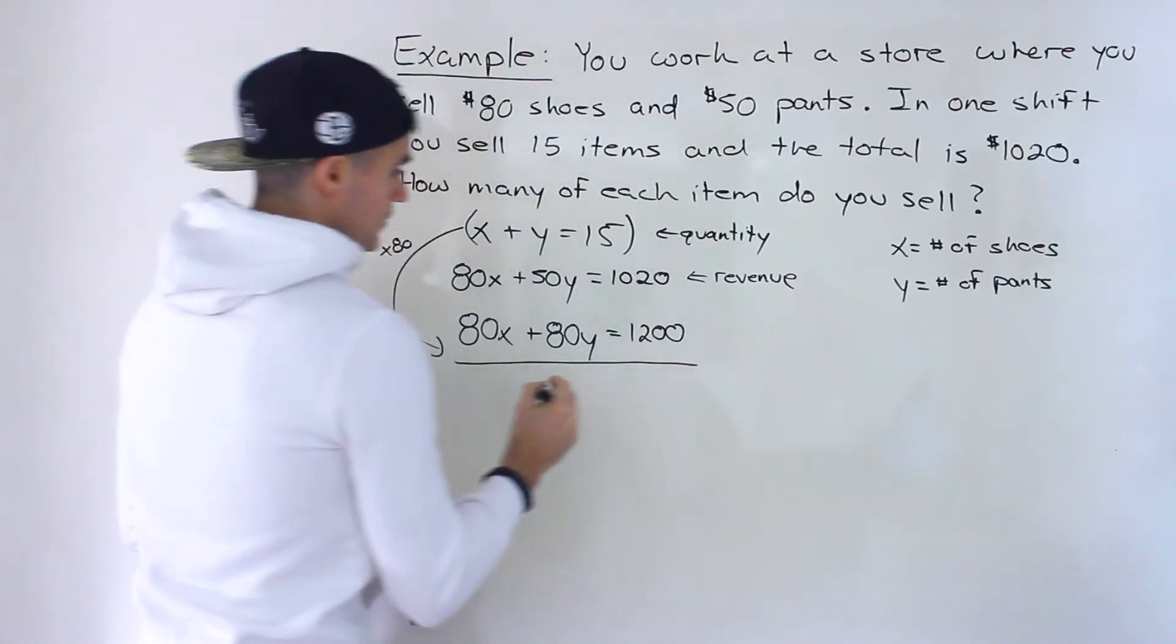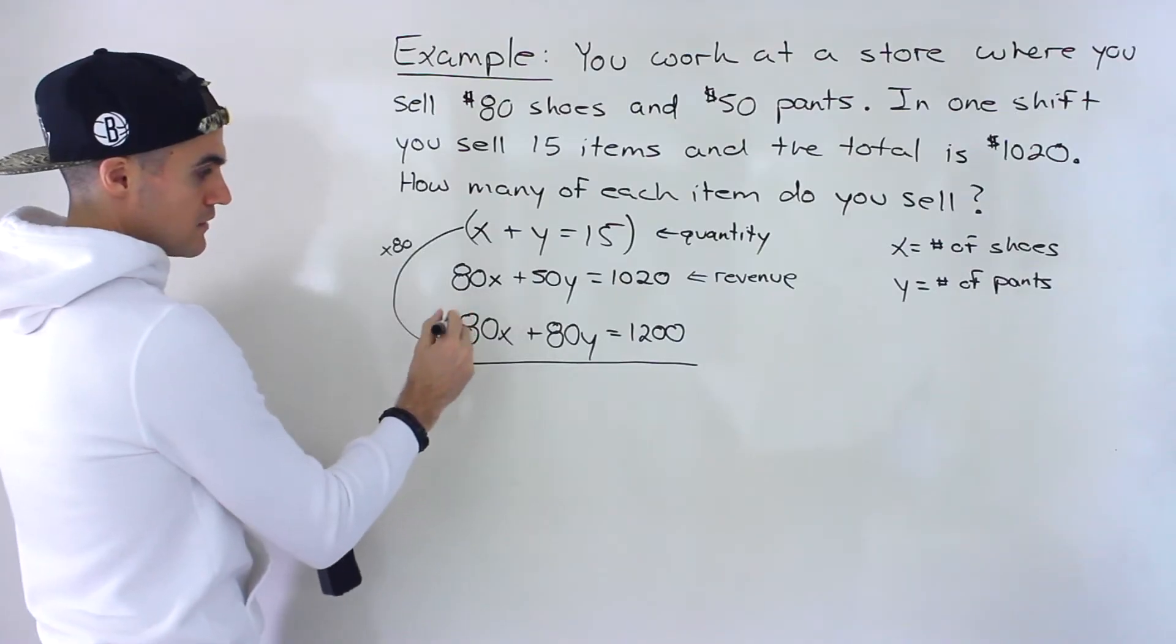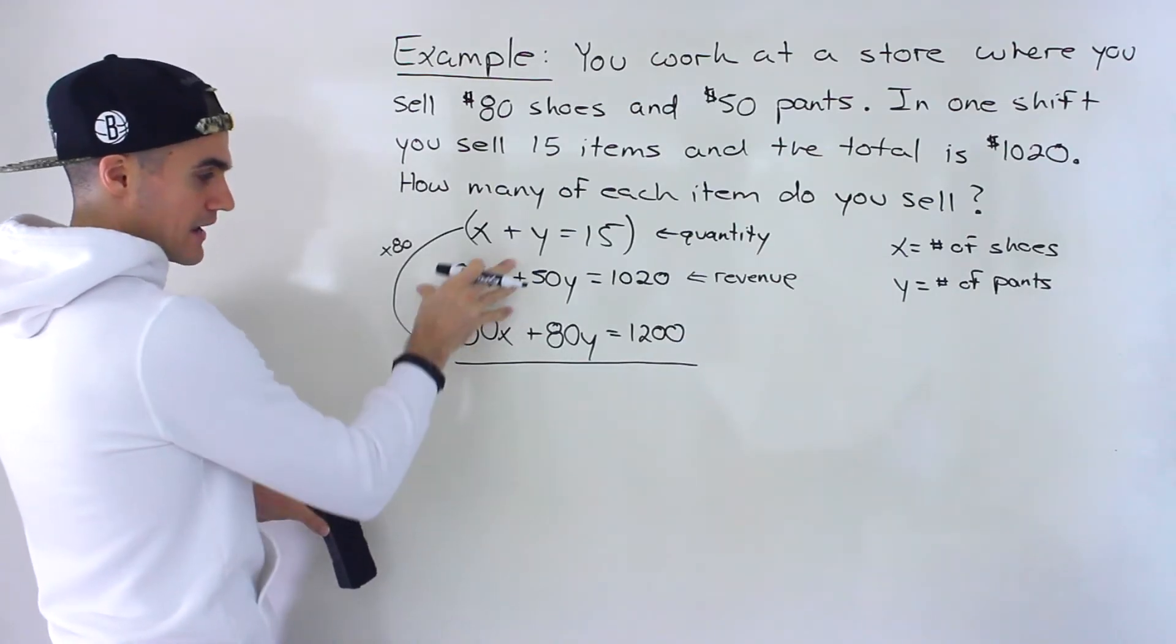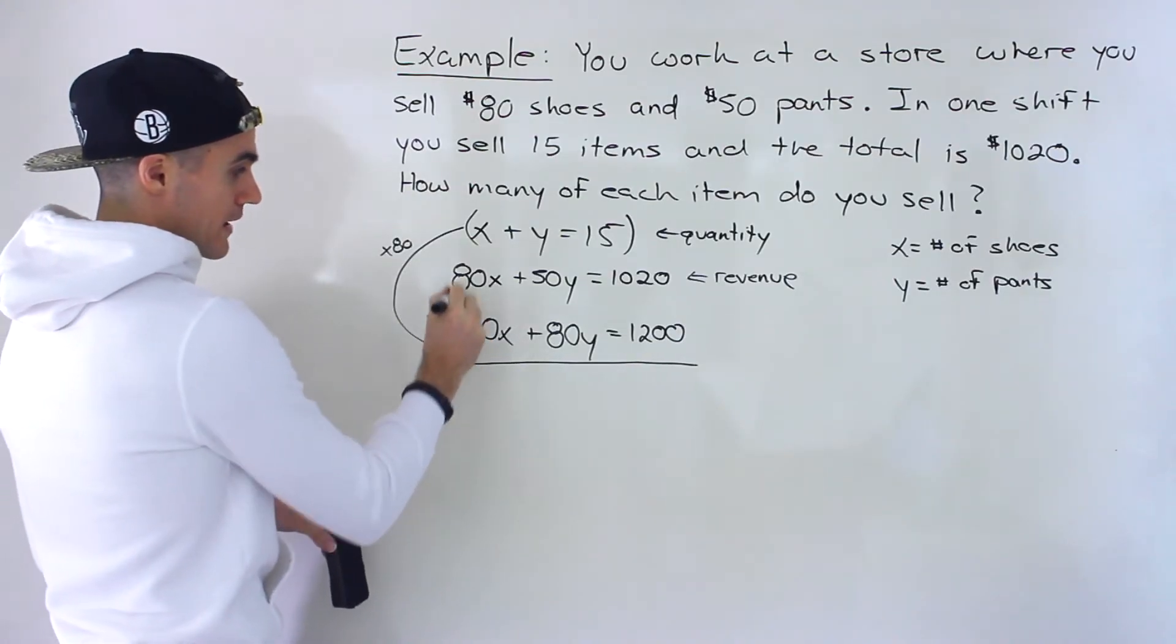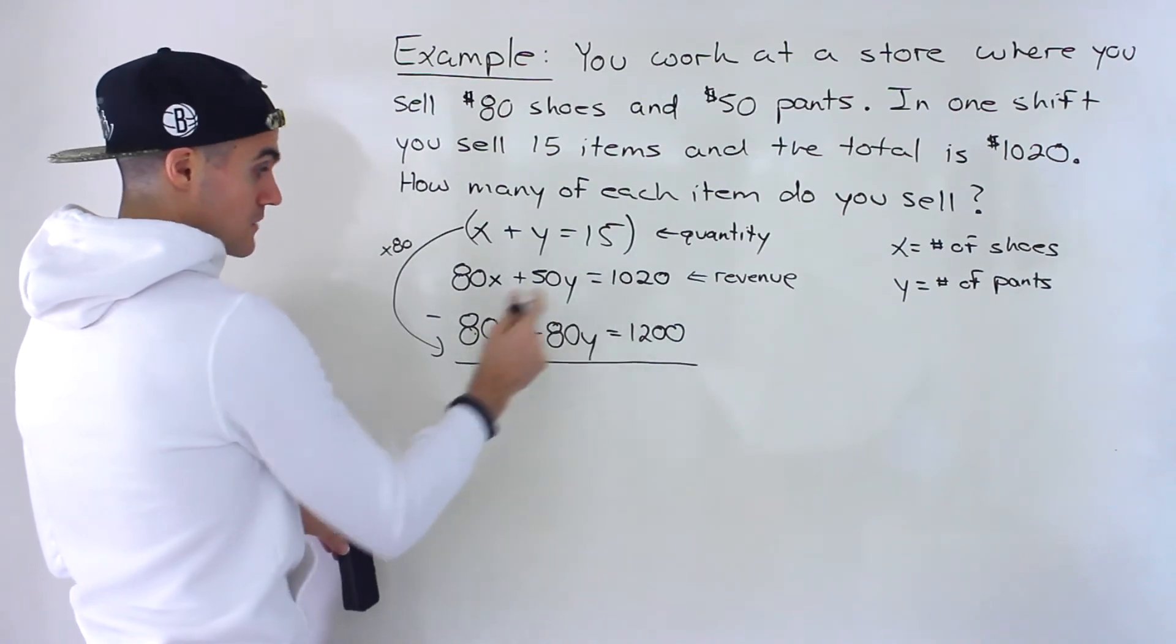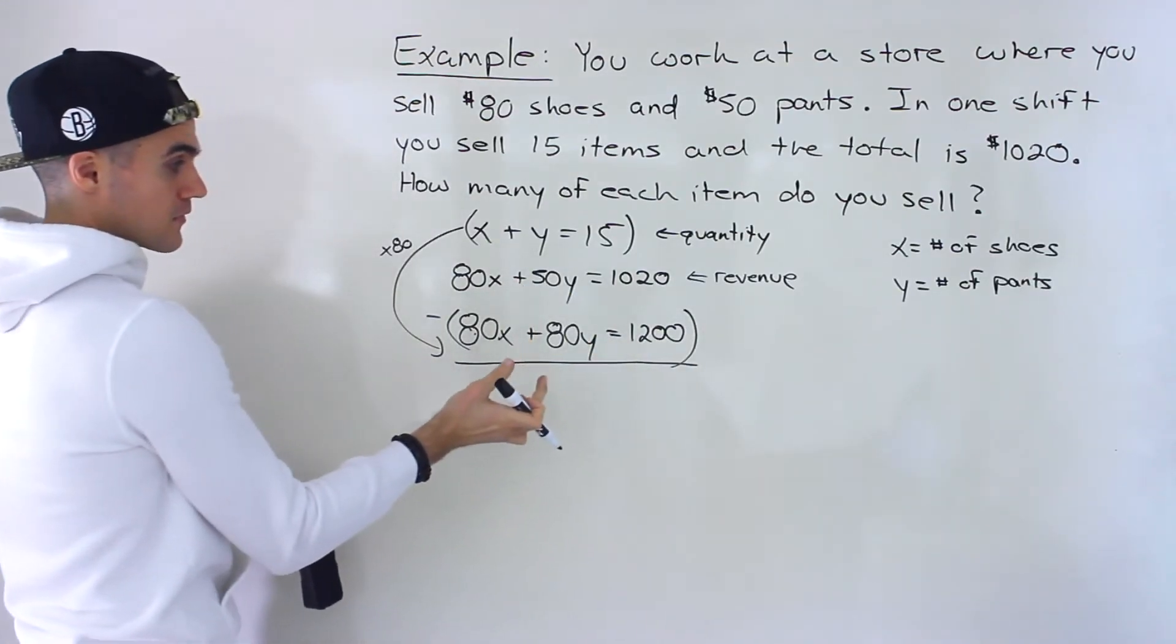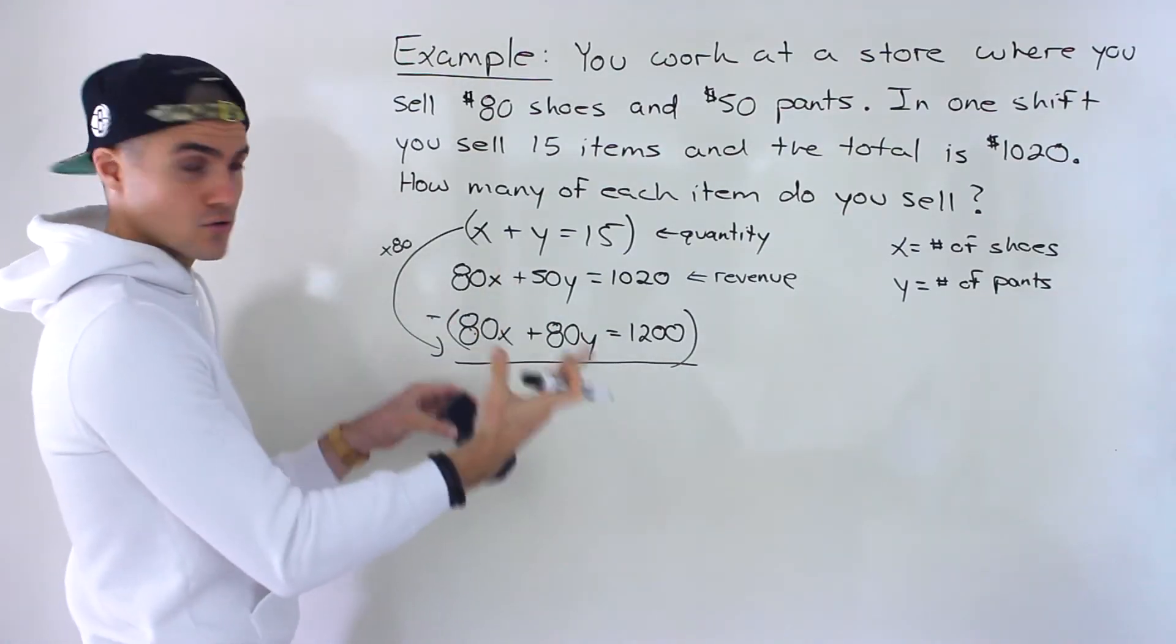And then what we do is because these signs are the same, we want to subtract this from that. If the signs were different, so if this was positive, this was negative, then we would just add them to get rid of the x's. But because the signs are the same, we've got to subtract this from that. So we're actually subtracting all of this from all of that. So 80x minus 80x would just give us 0x, so those cancel out.